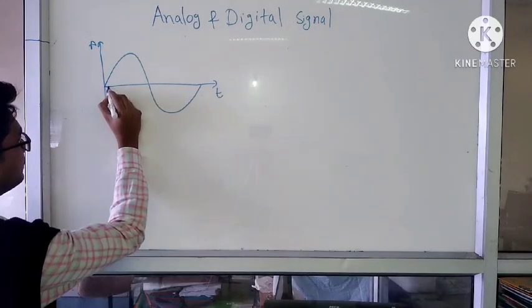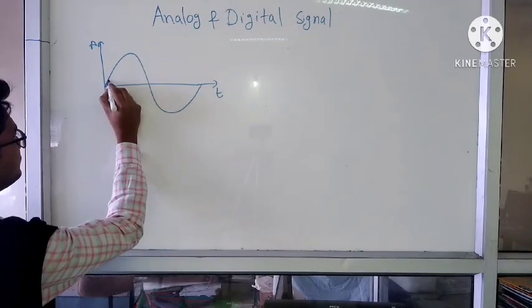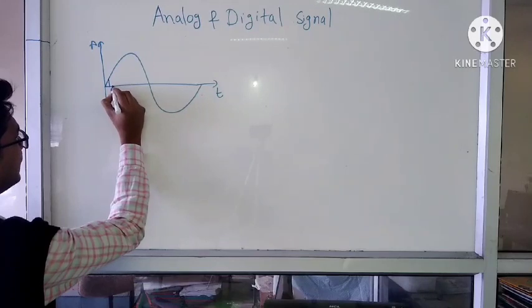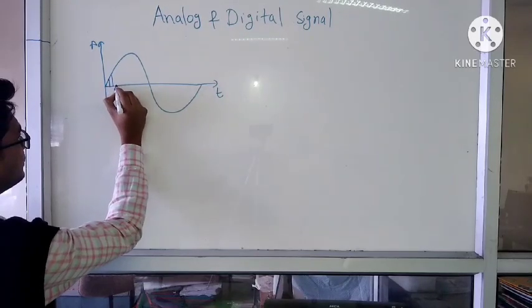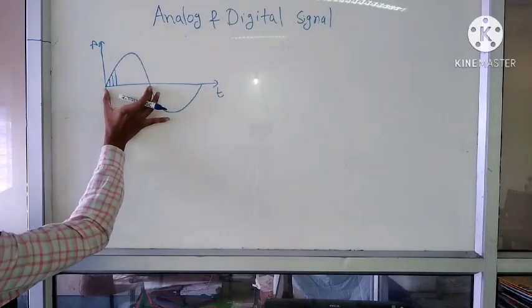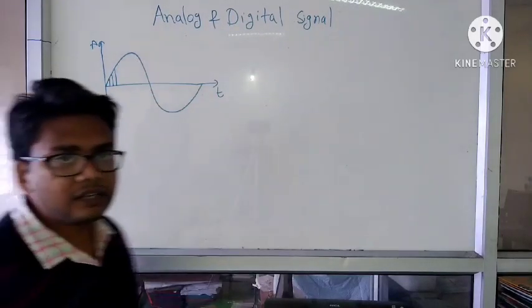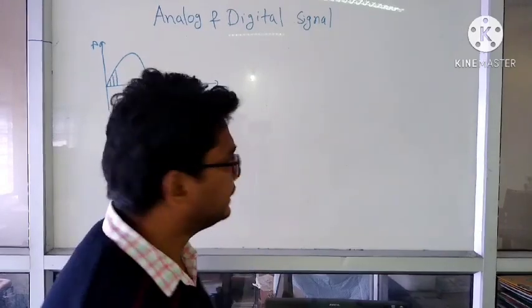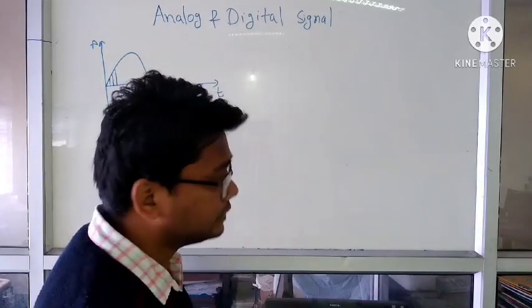We can say for this particular point the signal amplitude is different, and for this particular time the signal amplitude is different. It means that for a particular range of values it will give you infinite number of data. While in case of digital signal we can say it will give you discrete values, either it will be 0 or it will be 1.